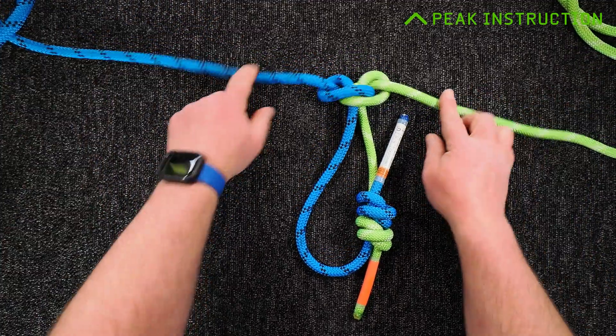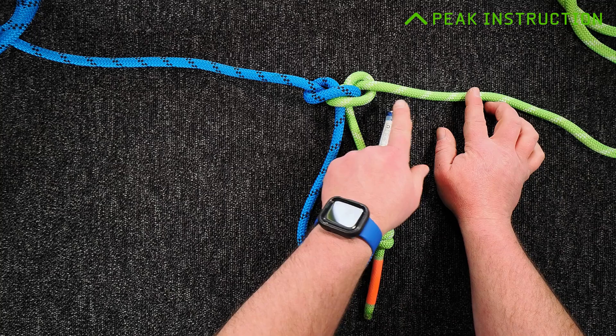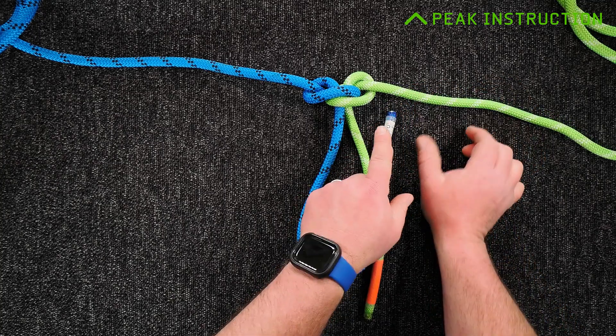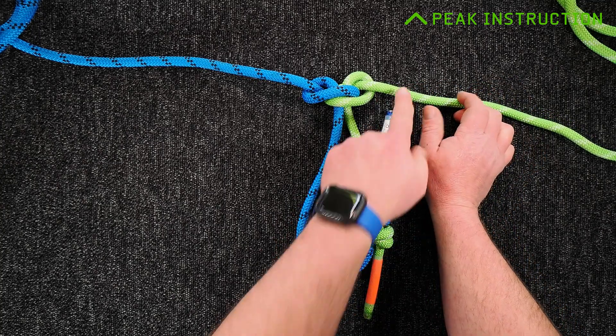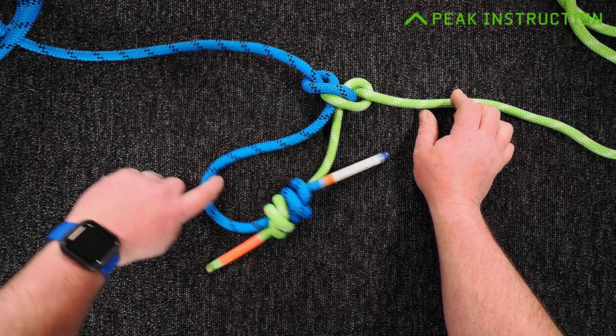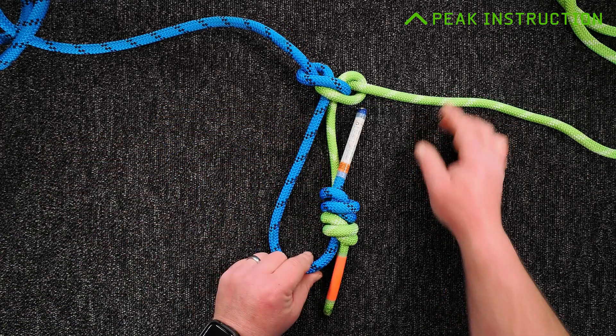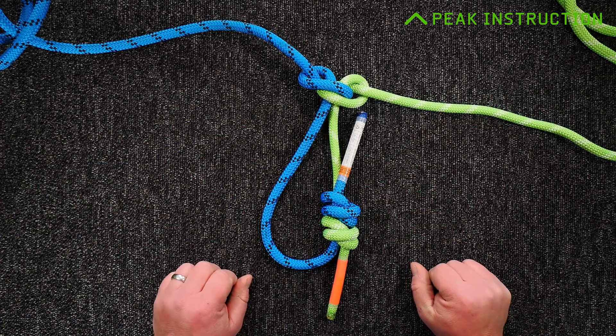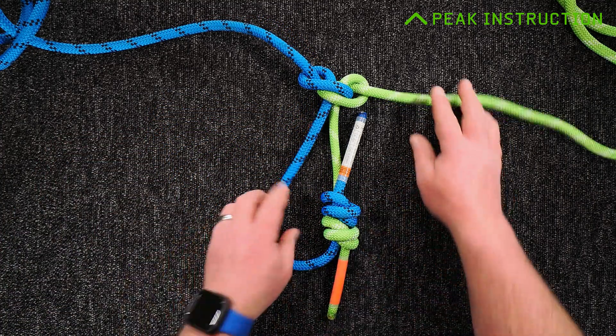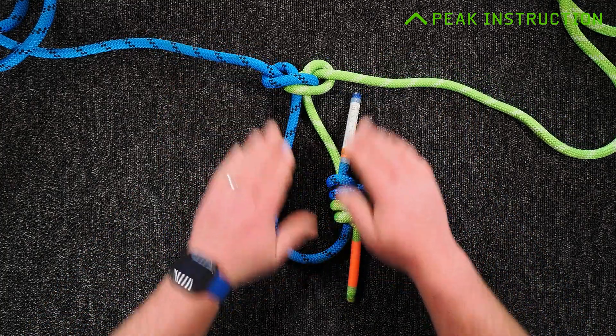Worst case, I'm doing my maneuver to pass my chest ascender over this knot, I've got my hand ascender on with my foot loop, and I slip and miss and drop down. My cow's tail is going to catch in that loop and sit nicely in the basket there, as opposed to jamming up against one of these knots. It's just a nicer way to load a carabiner if you did happen to slip during this maneuver.